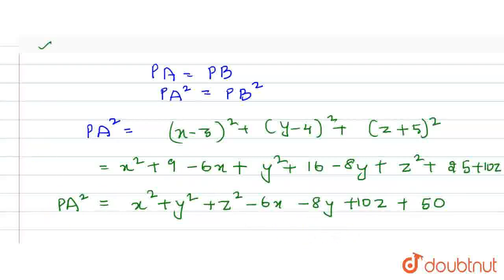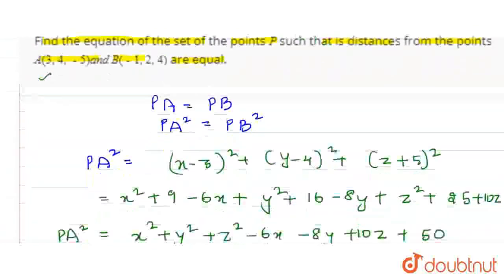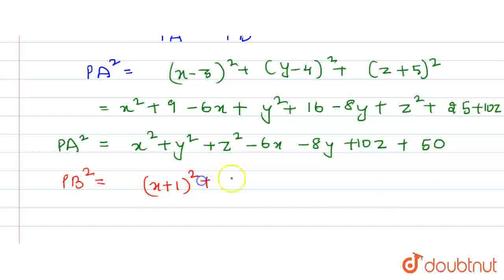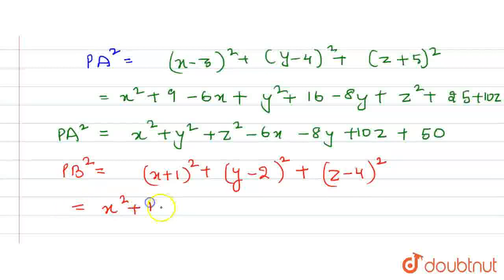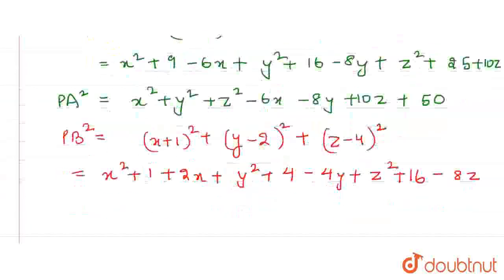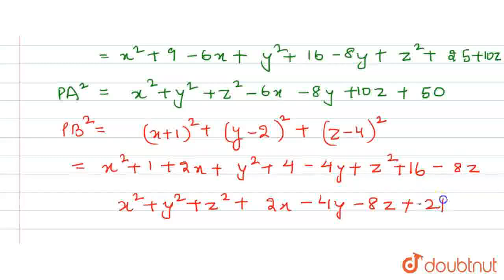Now finding PB squared using the distance formula. PB squared equals (X plus 1) whole square plus (Y minus 2) whole square plus (Z minus 4) whole square. Expanding: X squared plus 1 plus 2X plus Y squared plus 4 minus 4Y plus Z squared plus 16 minus 8Z. After simplification: X squared plus Y squared plus Z squared plus 2X minus 4Y minus 8Z plus 21. This is the value of PB squared.